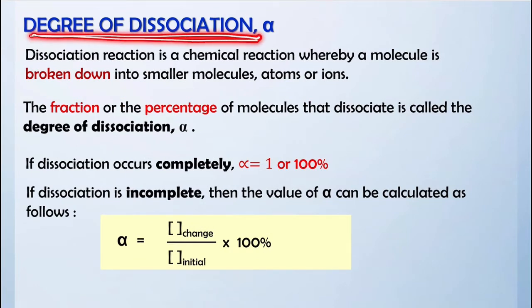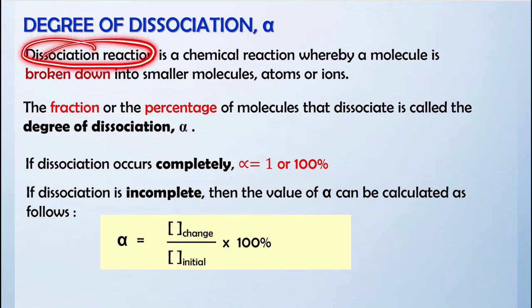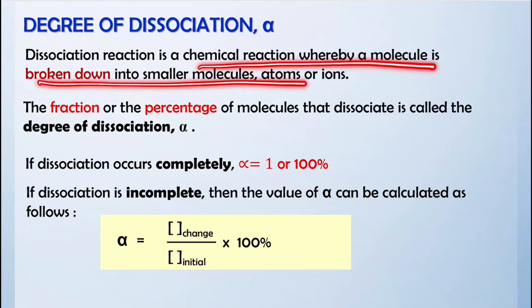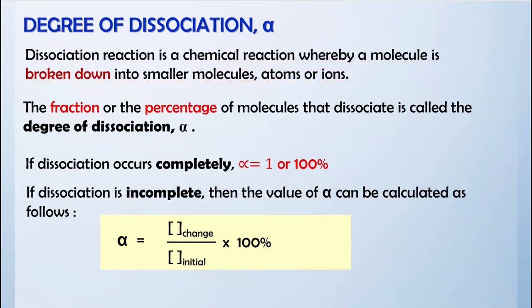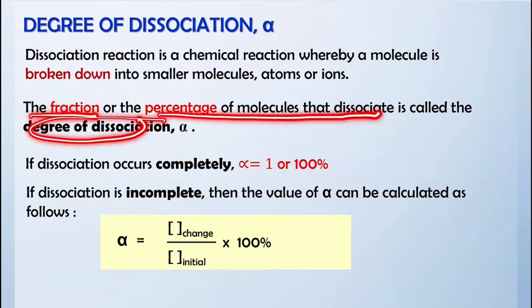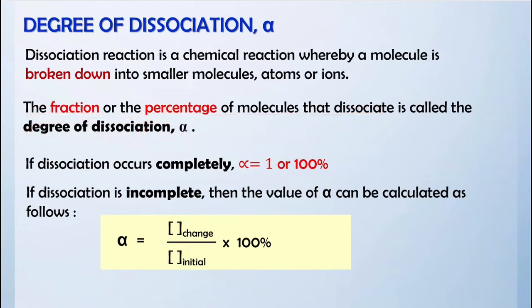Dissociation reaction is a chemical reaction whereby a molecule is broken down into smaller molecules, atoms, or ions. The fraction or percentage of molecules that dissociate is called the degree of dissociation, symbolized by α (alpha).